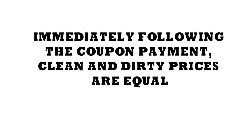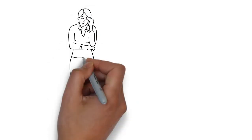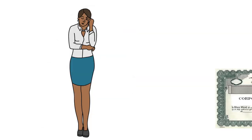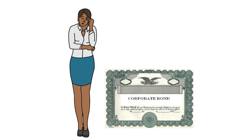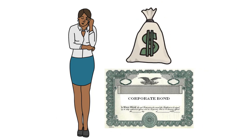Hence, immediately following the coupon payment, the clean and dirty prices are equal. The holder who sells the bond is compensated for the dates she owned it in between coupon payment dates. She receives the dirty or invoice price.